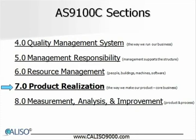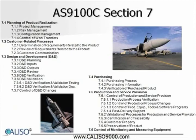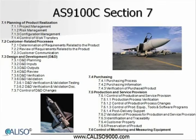Section 7 is titled Product Realization — a term used to describe the process for realizing the product, or simply how we make our product. This section contains a bulk of the requirements. This slide lists the titles for the six clauses and 28 sub-clauses found in Section 7. There are too many specific requirements to cover in this brief introductory video, but the online training course will cover each clause and sub-clause in detail. Because this section is focused on product realization activities specific to aviation, space, and defense, it has the most additional requirements over and above what ISO 9001-2008 requires.